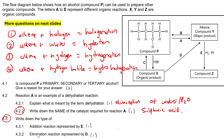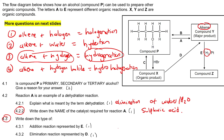Now we are looking at addition. It says write down the addition reaction represented by E. With E, you are going from an alkene and what you are adding is hydrogen. So that means it's hydrogenation — and so that would be called hydrogenation.